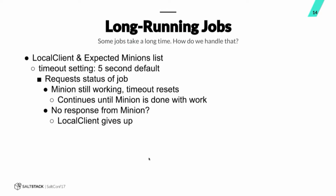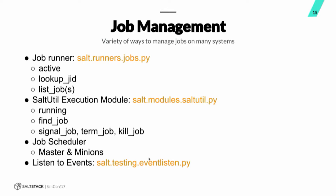Now we'll talk about some job management. We have the job runner, so we can list all the jobs that are running, look at particular jobs, look at their JIDs. We could also use the salt.utils execution module, and that's actually what the local client uses when it's asking about the status of a job — it uses the find_job function. You can kill jobs and send different signals to jobs. And then of course we also have a job scheduler — there's a scheduler for the master and a scheduler for the minion. So we can schedule all kinds of jobs in all kinds of places. All of these things tie into each other — you can see how the reactor is tied into this whole system, or a beacon is tied into this whole system. You can listen for all kinds of jobs in all kinds of places.